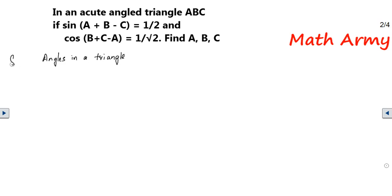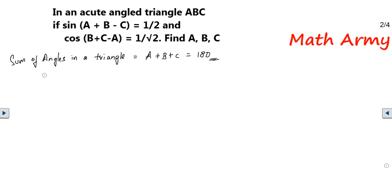The sum of angles in a triangle is always equal to 180°. Normally in a triangle you will have angles A, B, C, so I have taken A + B + C = 180°. I am going to use this later within the solution.